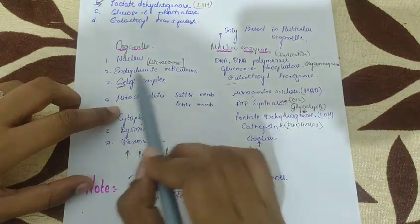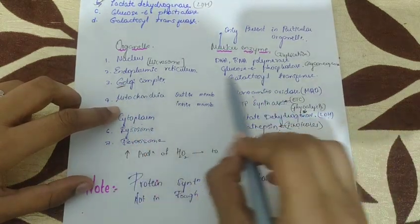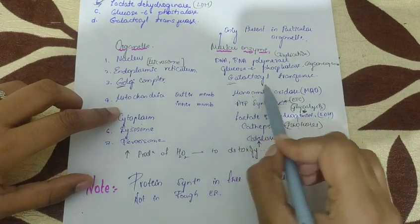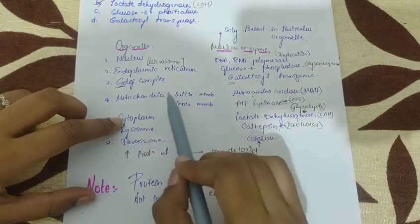For the Golgi complex, you can remember G and G — Golgi complex, and the marker enzyme is galactosyltransferase.